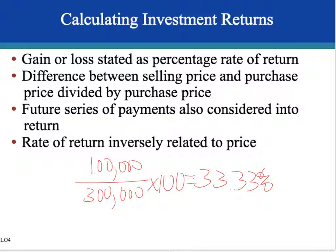Also, if you decide to rent your house instead, you can calculate return by dividing the expected rent earnings in a period by the purchase price. For example, if you bought the house for $300,000 and expect to earn $20,000 in rent for the year, you'd divide $20,000 by $300,000, and the rate of return would be 6.67%.